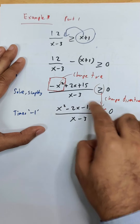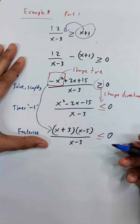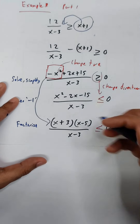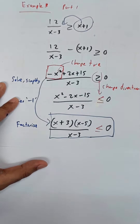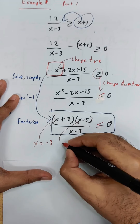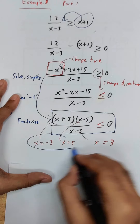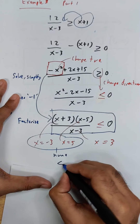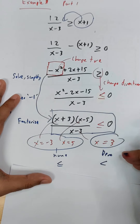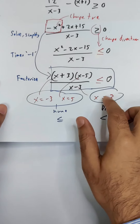If you press your calculator directly from the non-factorized form, the sign will likely change incorrectly. That's why we multiply by negative one manually first. Once you reach the factorized form, extract the critical values: x equals negative 3, x equals 5, and x equals 3. Note that negative 3 and 5 come from the numerator, so they allow equality (closed bracket), while 3 from the denominator does not (open bracket).